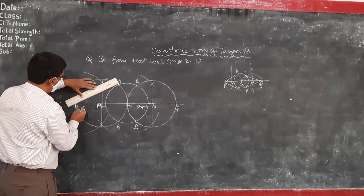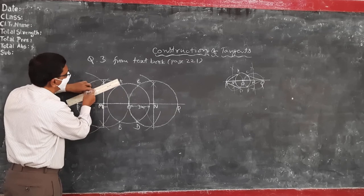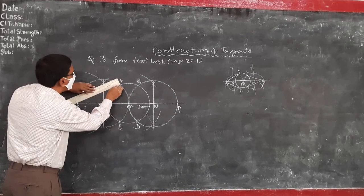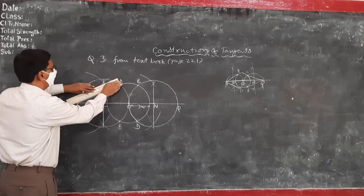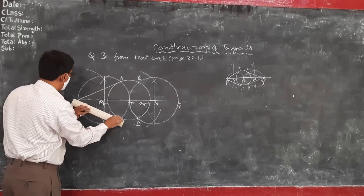T, A, we join T, A. And T, B, the tangent required.